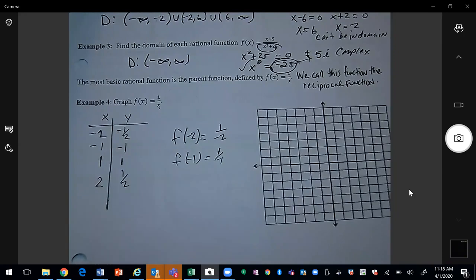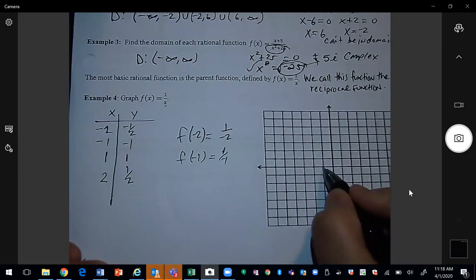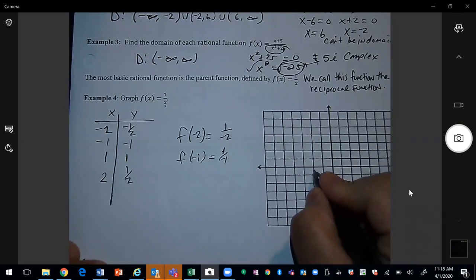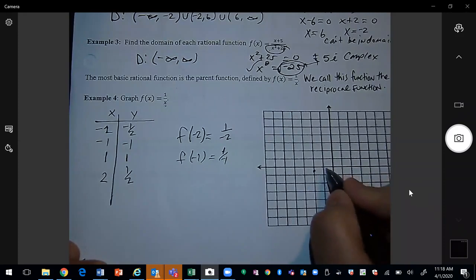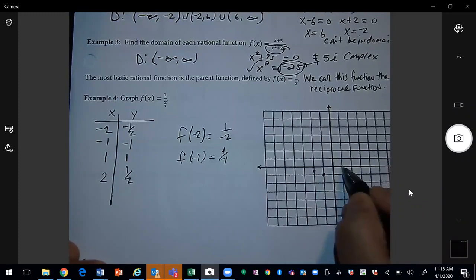So if I plot these points, then we have negative two and a half, which is right here, negative one and negative one, one and one, and two and a half.